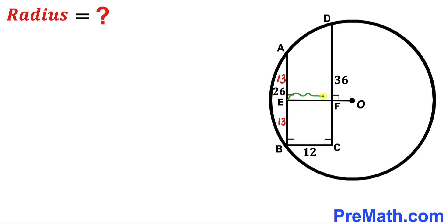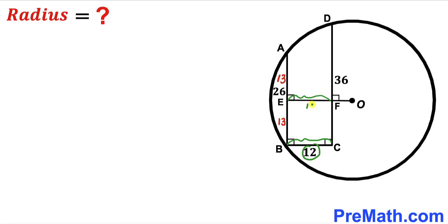We can see that perpendicular EO intersects segment CD at point F, and that angle is 90 degrees as well. Segment EF is equal to segment BC, so since BC is 12, EF is 12 as well. I am going to label the small segment FO as x units, making the whole perpendicular EO equal to x plus 12.